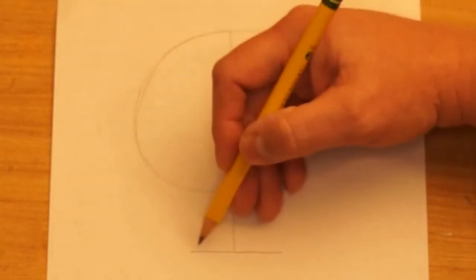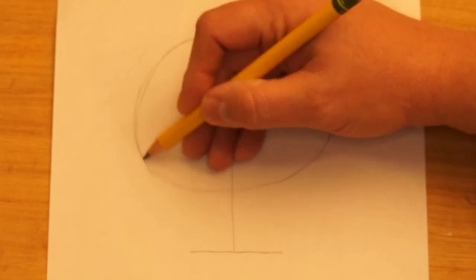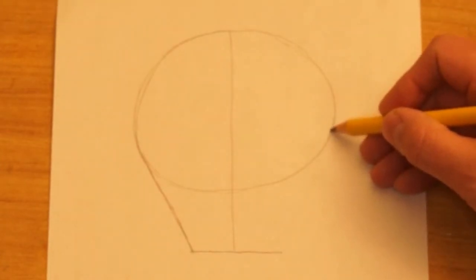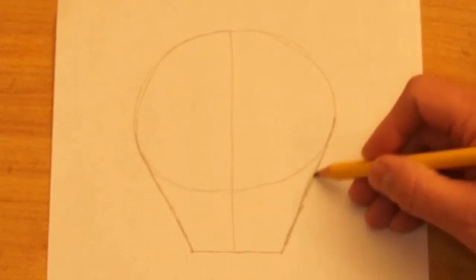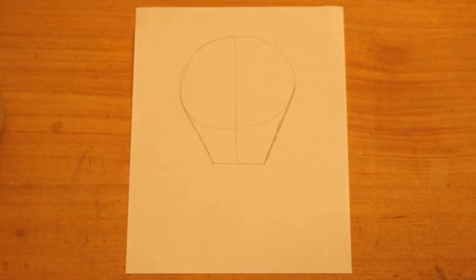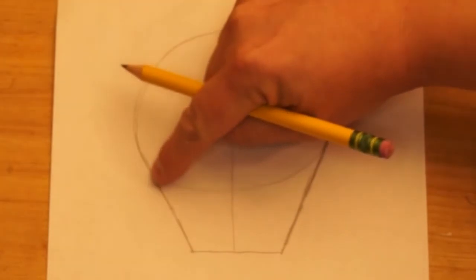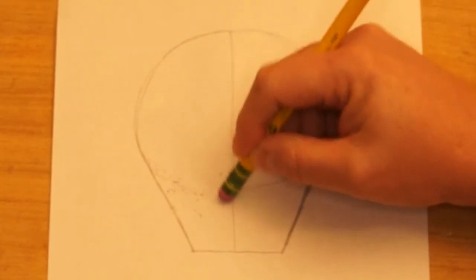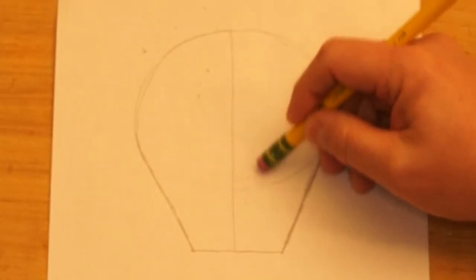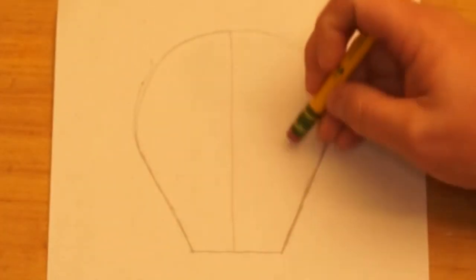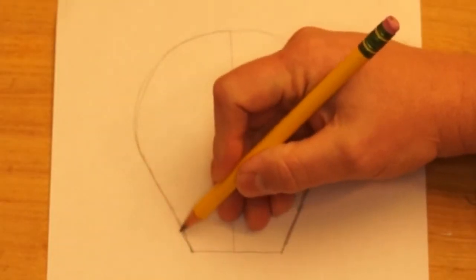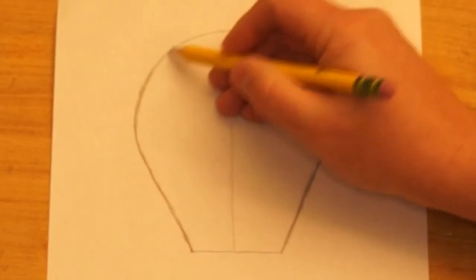Next we connect the outside of the circle to this line. So I'm going to start here on the edge and I'm going to slant down to that line. And I want to do the same thing on the other side. Start on the edge of the circle and slant down to that horizontal line. Now let's erase this bottom part of the circle. We don't need that anymore. So I'm going to make my lines a little darker since this is where I want it to be. This is the shape of our balloon.